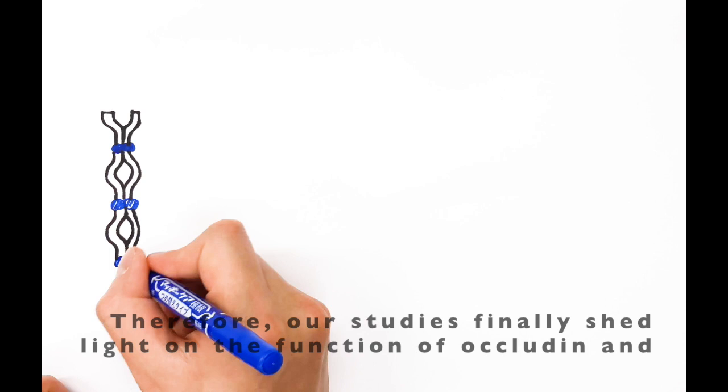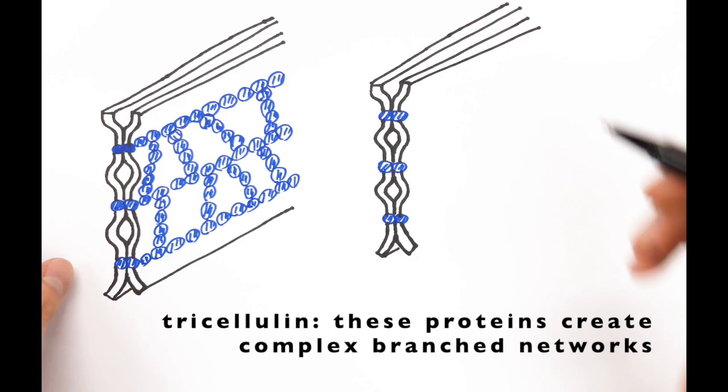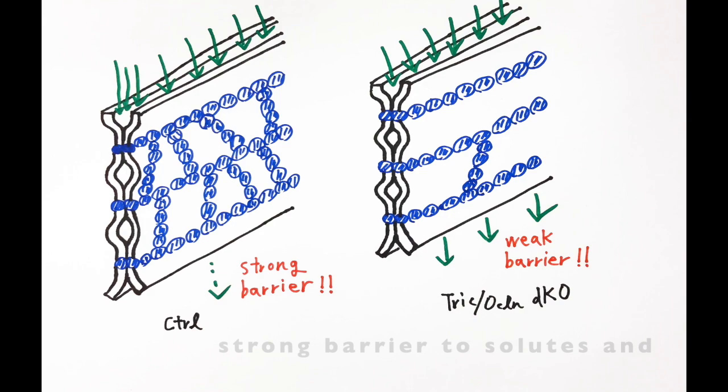Therefore, our studies finally shed light on the function of occludin and tricellulin. These proteins create complex branched networks of tight junction strands, thus providing a strong barrier to solutes and preventing epithelial sheets from leaking. To learn more, please check out our paper.